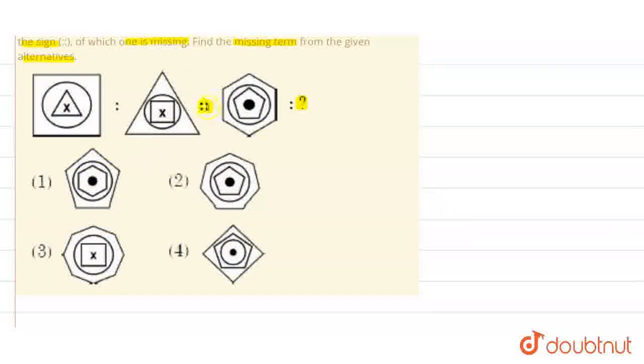Basically, we will tell you which option will come from these 4 options. This symbol is the sign. The two figures on the left follow a relationship. The relationship between them will be followed on the right. When we consider it, we will tell you the correct option. First of all, let's look at the relationship.